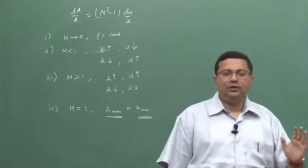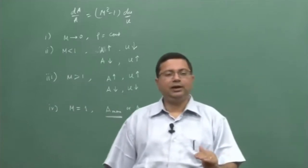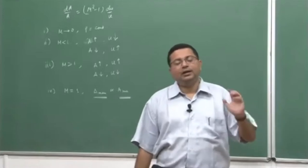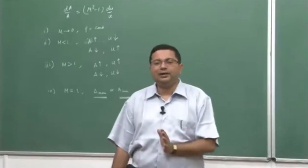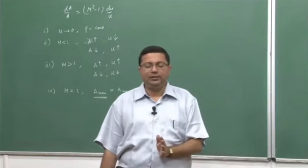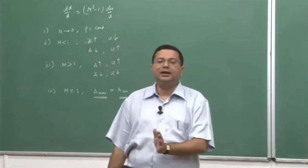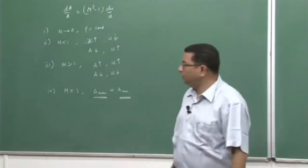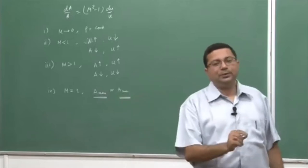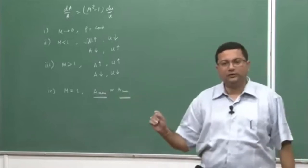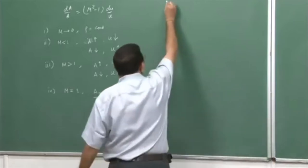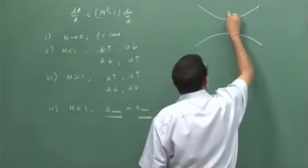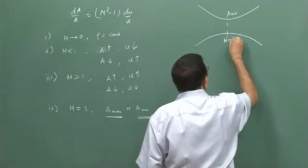On the other hand, if we take the flow through a minimum area, it gives a monotonic variation in velocity. If you have a subsonic flow and take it through a minimum area through a converging-diverging passage, the flow will accelerate in the converging area, come to sonic speed at the minimum area, and then further accelerate in the diverging area because in that portion it will be supersonic.